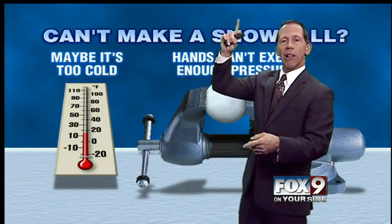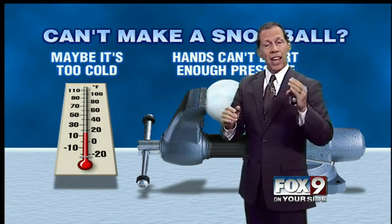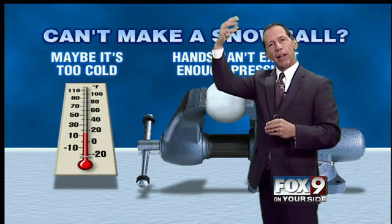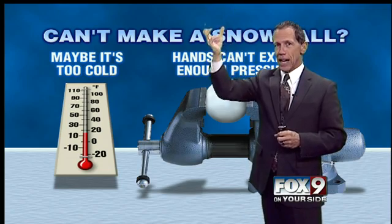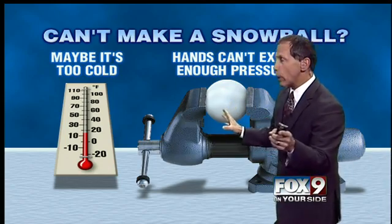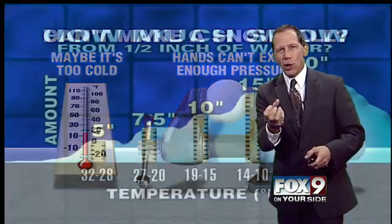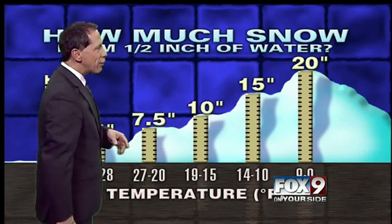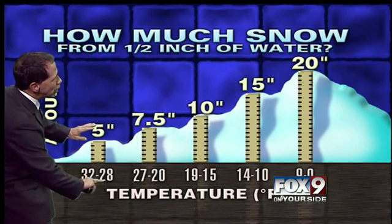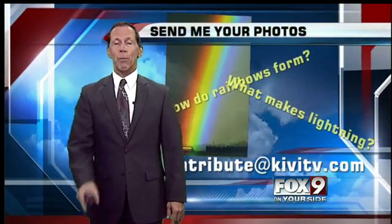You asked what temperature is needed — it needs to be 32 degrees or colder to get snow. Way up in the clouds, even in summertime when you're out at Roaring Springs, those high thin wispy clouds are made of ice crystals — it's 50 below zero up there even in summer. As precipitation falls in summer it starts as snow but turns to rain. Now with cold weather the snow comes all the way down. Temperature matters a lot: if it's too cold you can't make good snowballs. As shown here, from a half inch of water, at 32–28 degrees you can get 5 inches of snow, but at 14–10 degrees you can get up to 20 inches of snow.